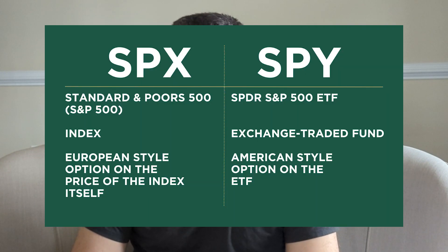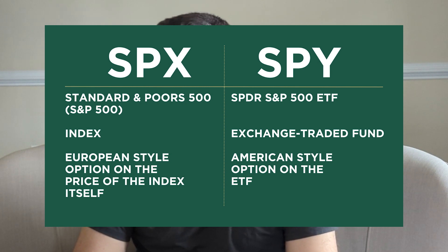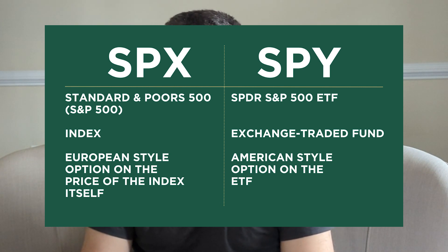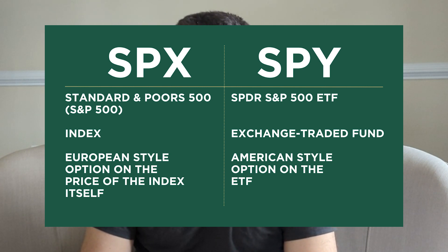First, a little background on SPX and SPY. SPX is the Standard & Poor's 500, or the S&P 500. It is an index created by the CBOE. SPX has European-style options on the price of the index itself.